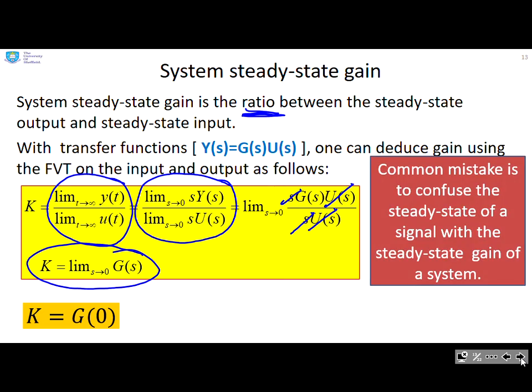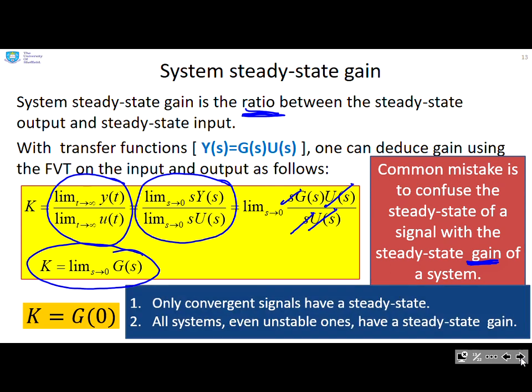A common mistake is to confuse the steady state of a signal with a steady state gain of a system. So please be clear, are you talking about the gain of a system or the steady state of a signal? And another mistake that people can make is only convergent signals have a steady state, but all systems, even unstable ones, have a steady state gain.